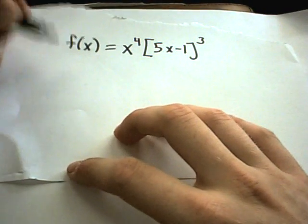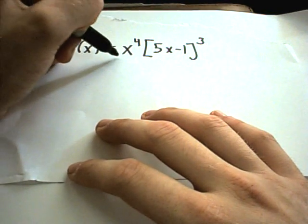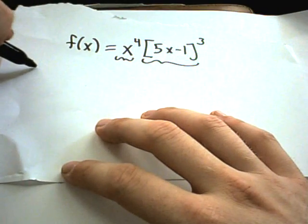Alright, here's another example of finding derivatives using the product rule along with the chain rule. So again, I see two separate pieces here being multiplied.